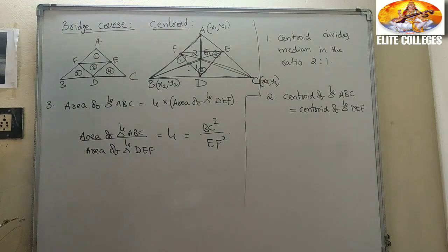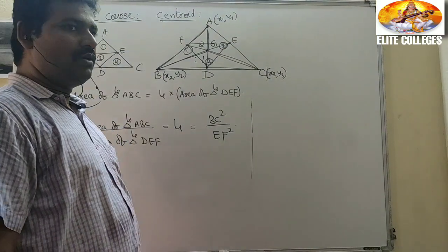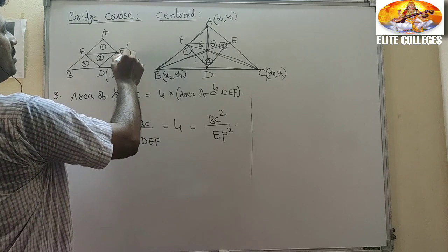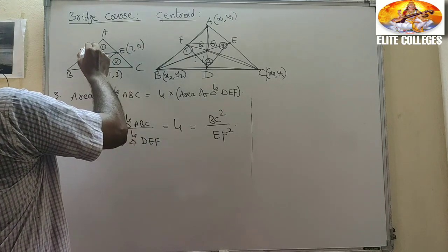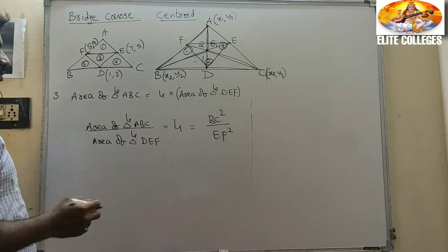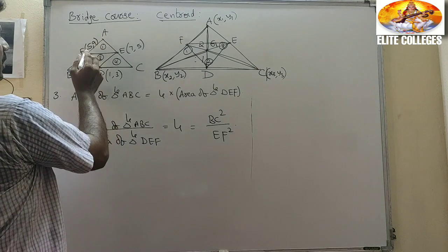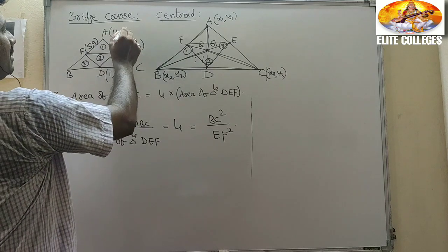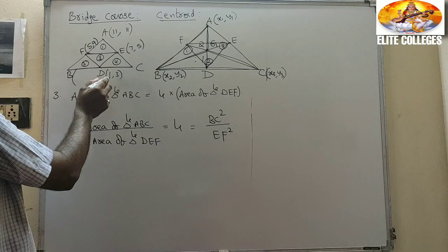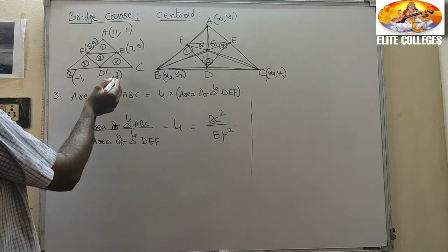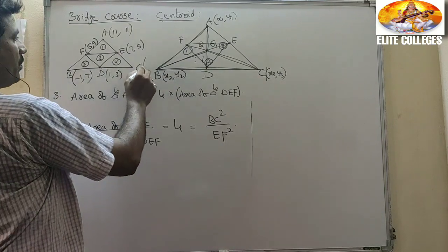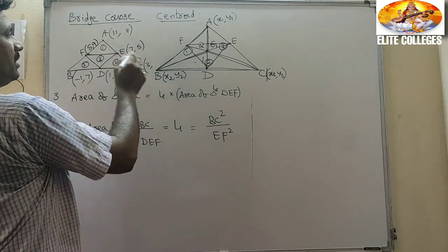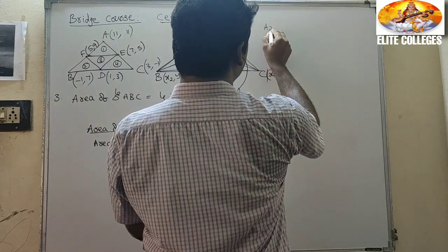Now let us check this property. Taking point D as (1, 3), point E as (7, 5), and point F as (5, 9), we can find the vertices. Point A: (5+1)=6, (6-1)=... working out to (11, 11). Point B: (5+1)=6, (6-7)=-1, (9+3)=12, (12-5)=7, giving (-1, 7). Point C: (1+7)=8, (8-5)=3, (3+5)=8, (8-9)=-1, giving (3, -1).